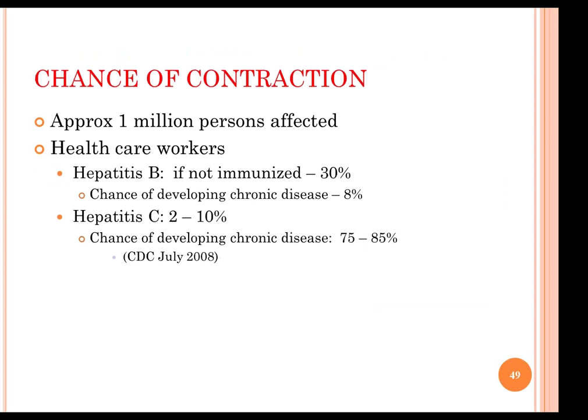There are approximately 1 million persons affected by hepatitis. Health care workers exposed to hepatitis B who are not immunized may have about a 30% chance of contracting it. The chance of developing chronic disease is about 8% — not everyone who is exposed and gets hepatitis develops chronic disease, but it is a serious illness. The younger you are, the higher your risk of developing chronic active hepatitis. Hepatitis C, while a smaller individual risk, causes greater liver damage in those who develop it.